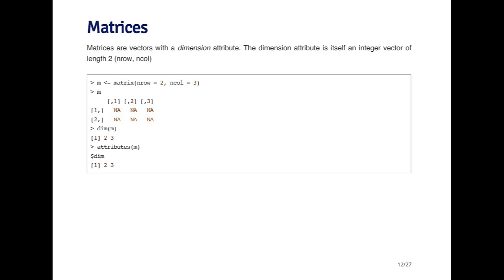You can create an empty matrix with the matrix function, and then explicitly specify how many rows and columns there are. This is not the only way to create a matrix, but it's one way. When I auto-print the matrix by typing the object M and hitting enter,